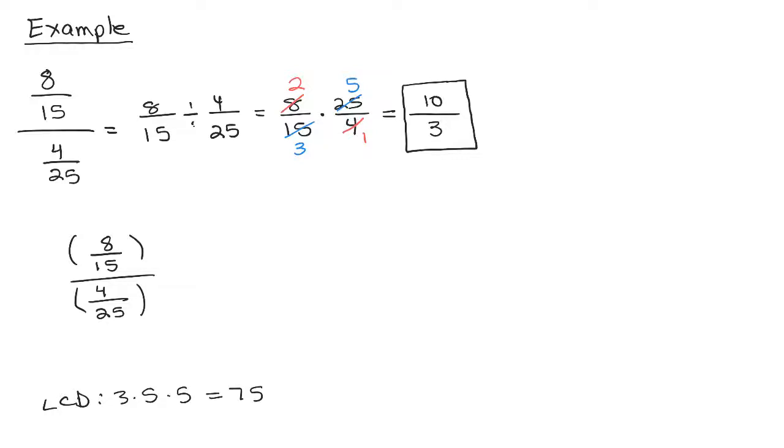You could call it the least common multiple of the denominators or just the least common denominator. So you multiply the whole numerator by 75 and the whole denominator by 75. This is simply making an equivalent fraction because 75 over 75 is like multiplying by 1. So I'm just going to distribute. And when you do this, the reason this works is because 15 will go into 75 and 25 will go into 75, so we're going to get rid of our fractions in the numerator and denominator.